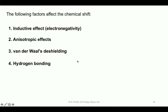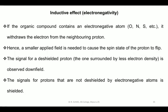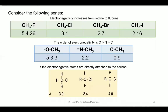First, electronegativity or the inductive effect. Whenever a carbon or hydrogen is attached to an electronegative element, the electrons attached to these will be more drawn by the electronegative element. Hence, a smaller applied field is needed to cause the spin state of the proton to flip. The signal for a deshielded proton is observed downfield, whereas signals for protons that are not deshielded always appear in the shielded region.